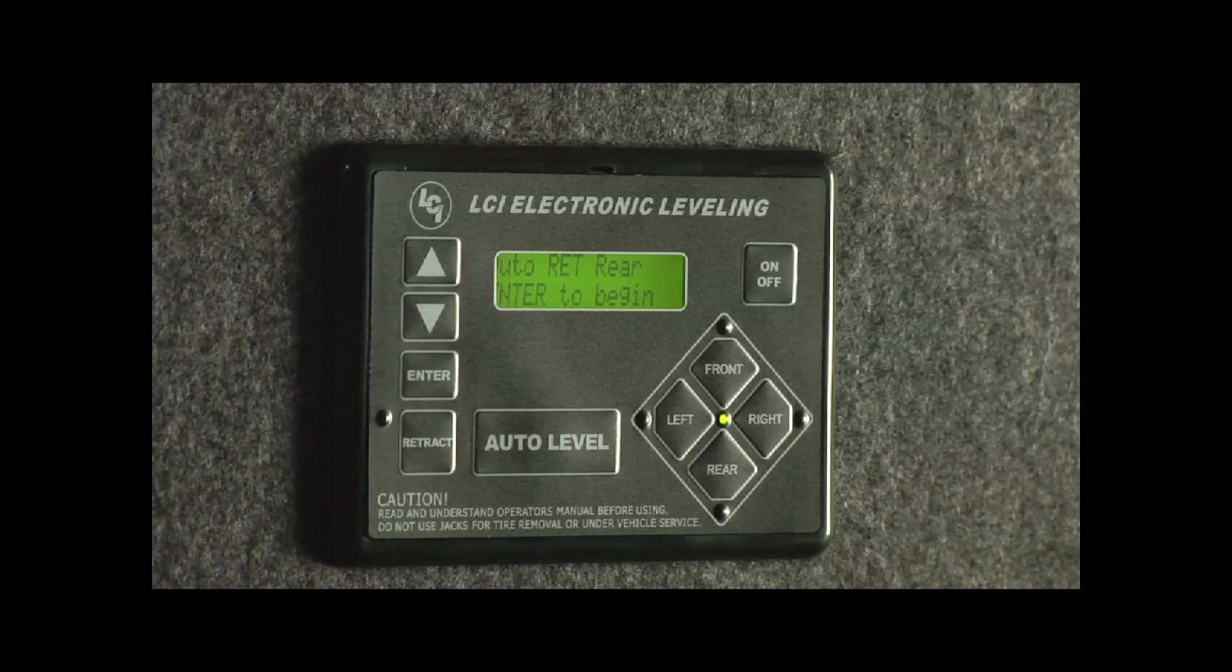Next one is auto retract rear jacks. This is a function that we use when we want to hook up our truck and we'll get to that in a moment. Our next one here is retract all jacks. This is something that we'd use once we were hooked up to the truck. We'll go through here shortly as well.